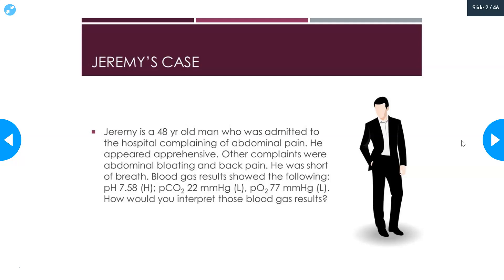Jeremy is a 48-year-old man who was admitted to the hospital complaining of abdominal pain. He appeared apprehensive. Other complaints were abdominal bloating and back pain. He was short of breath. Blood gas results show the following: his pH is 7.58, which is high; the PCO2 is 22, which is low; and the PO2 is 77, which is also low. How would you interpret those blood gas results?